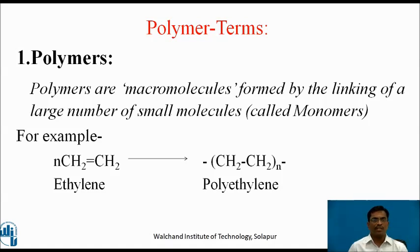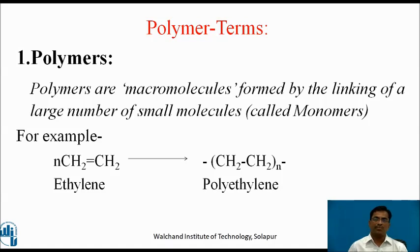A number of ethylene molecules are joined together because of the pi bond present between the two carbons, which increases the length of the molecule.